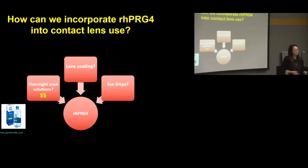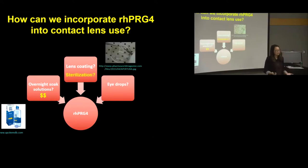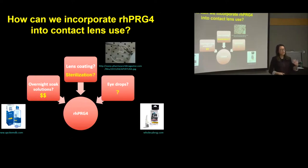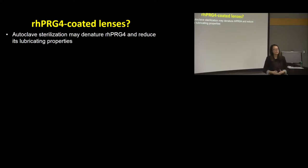Another option is a lens coating, using RH-PRG4 to coat the lens. However, we found a potential issue: in the manufacturing process, the last step is to sterilize contact lenses by autoclave at 121 degrees Celsius for 30 minutes. Since RH-PRG4 is a protein, we think autoclaving could denature it. The third option is eye drops with RH-PRG4. We decided to take a closer look at the RH-PRG4 coated lens option to see if autoclaving affects its lubrication properties.